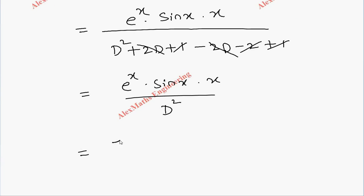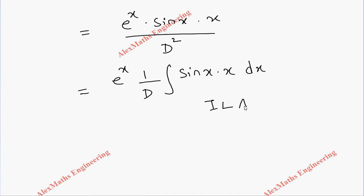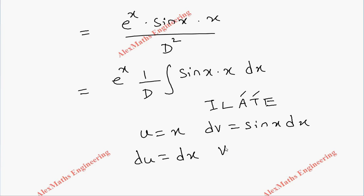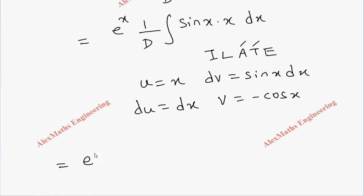Since D² in the denominator means we integrate twice, we first reduce it to (1/D) of the integral of sin(x)·x dx. We apply the ILATE method: u is algebraic x, and dv is trigonometric sin(x) dx. So du = dx and v = -cos(x). The IBP formula is u·v minus the integral of v·du.